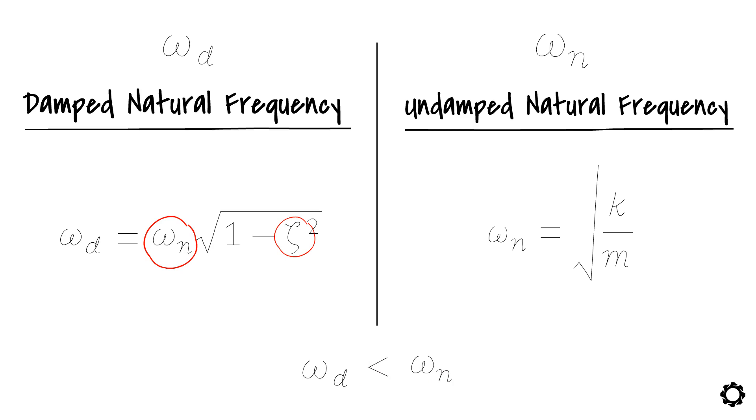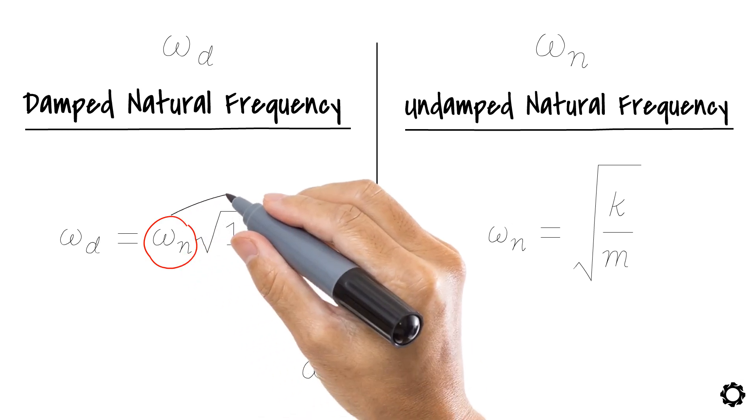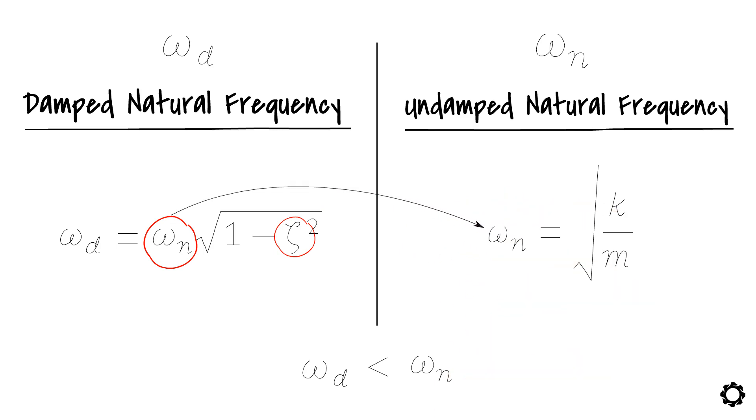As a conclusion, to know the damped natural frequency of a damped system, we need to first know the undamped natural frequency of the system. After that, we can determine the damped natural frequency by using the information about the system's damping ratio. See how easy it is?